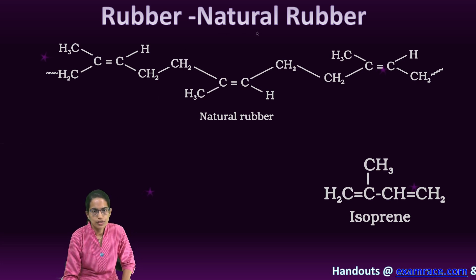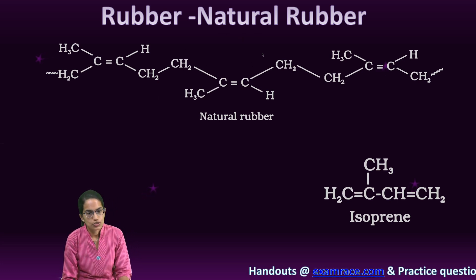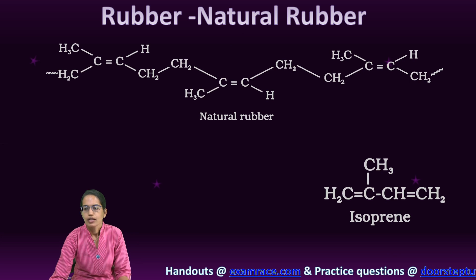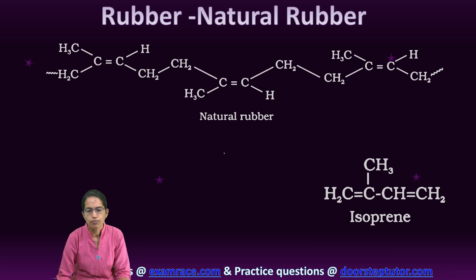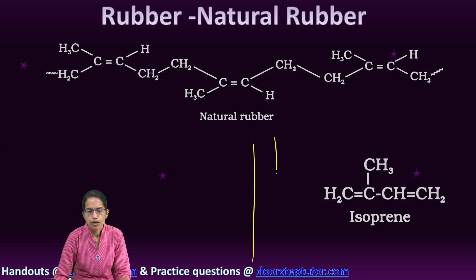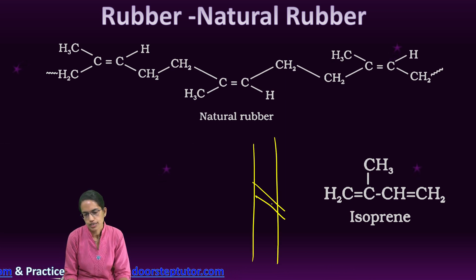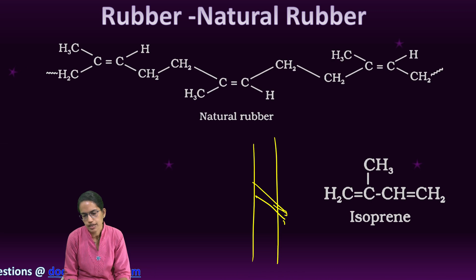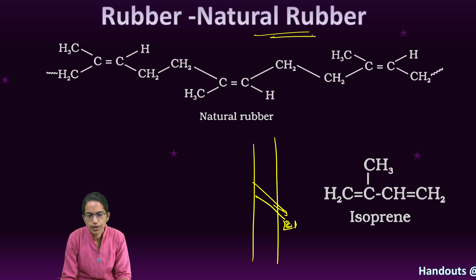Let's talk about rubber. We will focus on natural rubber as well as synthetic rubber. Natural rubber is interesting — how is it obtained? It is obtained from the latex of the rubber tree. The rubber tree is cut in cross section and the latex is collected in a pot, which then gives the natural rubber.